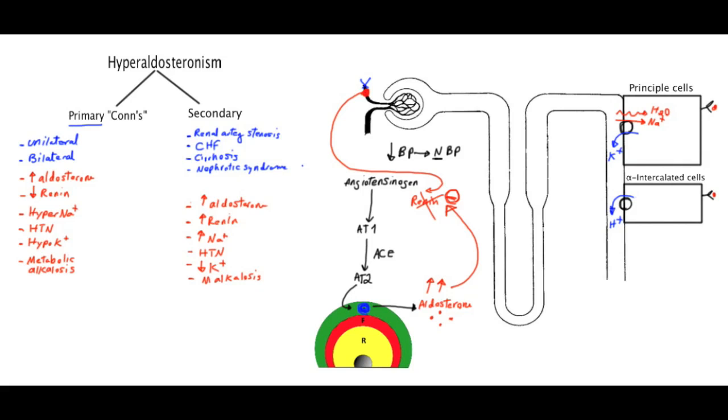So the only way to differentiate between primary and secondary is these two values. In primary, we're going to have increased aldosterone and the negative feedback is going to cause decreased renin. In secondary, we're going to have increased renin production, which is going to lead to aldosterone production. So both of these are going to be high in the secondary cause.